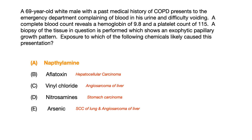Aflatoxin is associated with hepatocellular carcinoma. Vinyl chloride is associated with angiosarcoma of the liver. Nitrosamines are associated with carcinoma of the stomach. And arsenic is associated both with squamous cell carcinoma of the lung and angiosarcoma of the liver.